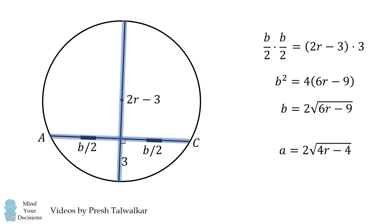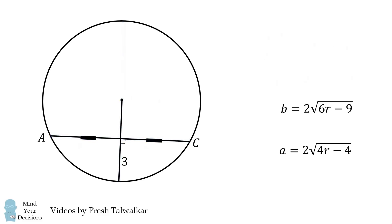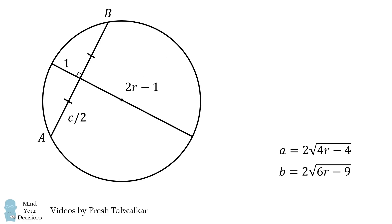Just as before, we solve for the value of b and we take the positive square root. We finally do the same sort of calculation to find the length c of the remaining side. Using the intersecting chords theorem, we get the following equation and then we can solve for the length c. We again take the positive length.